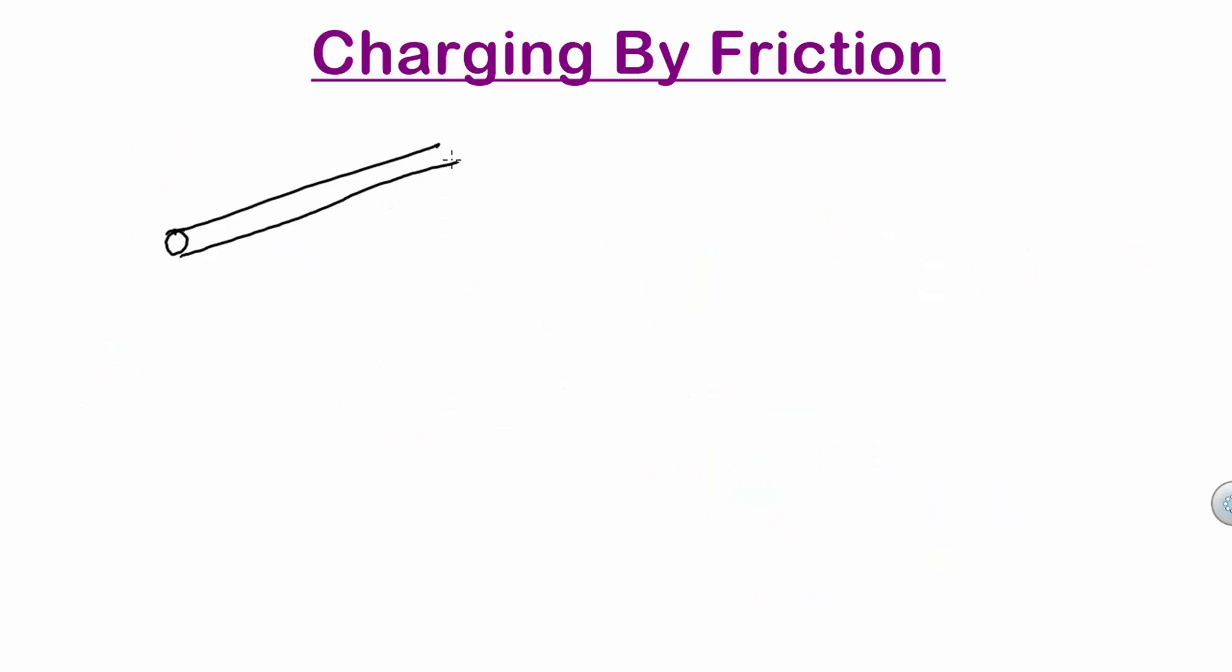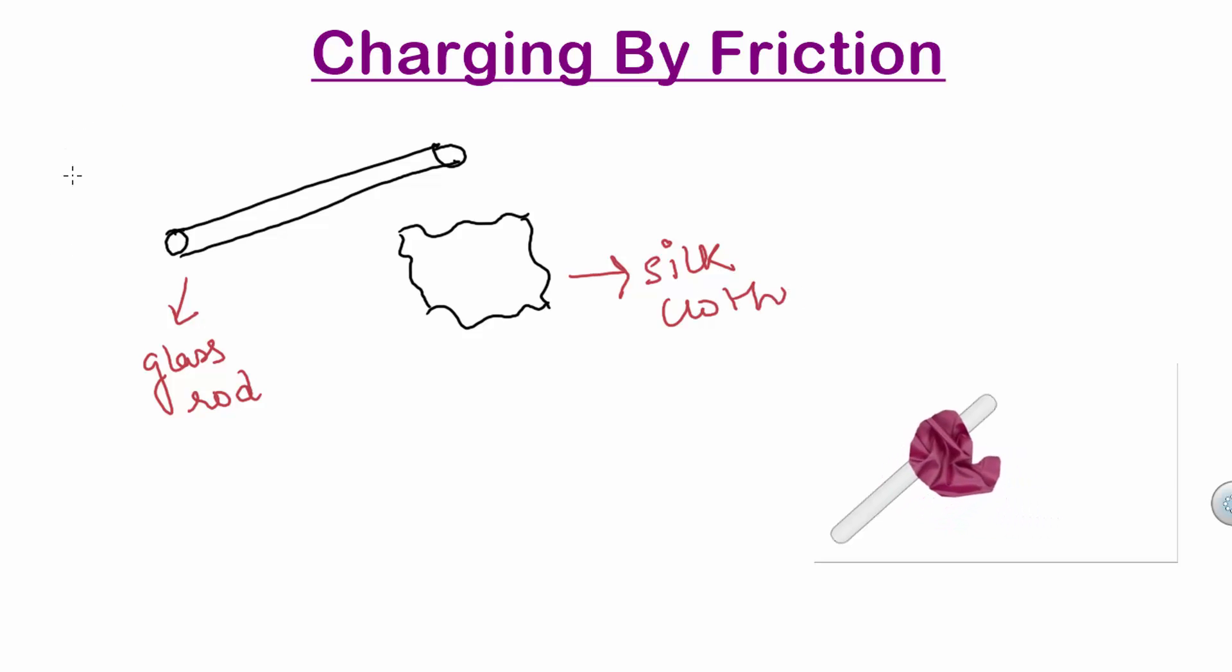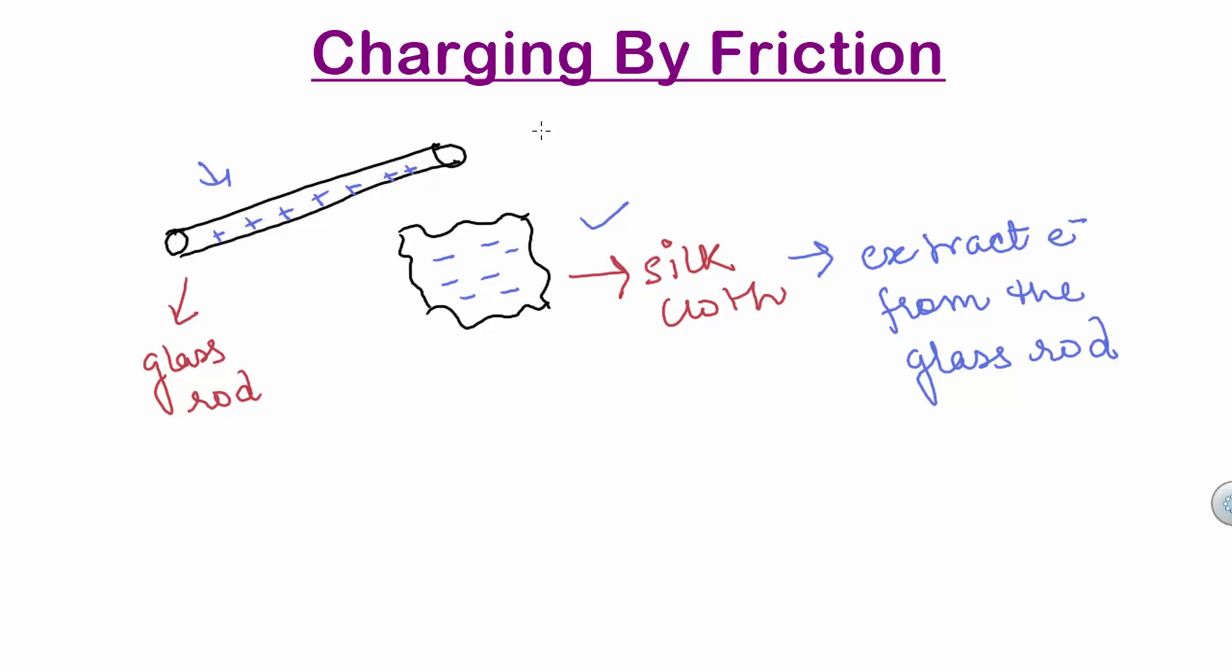Let us take another example of glass rod and silk cloth. If we rub this glass rod with a silk cloth, then silk cloth extracts electrons from the glass rod and gets negatively charged. As a result, this glass rod becomes positively charged because of loss of electrons.